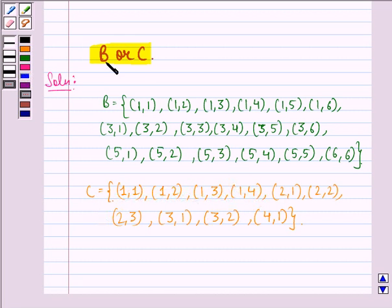Now we have to describe an event B or C. B or C is same as B union C. So that will include all the sample points of sample space B and sample space C.